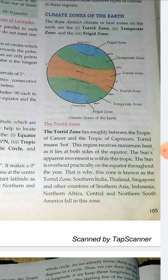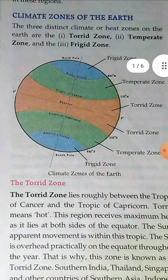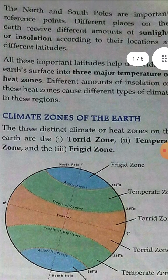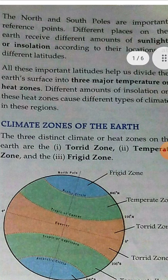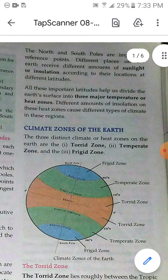Southern India, Thailand, Singapore, and other countries of southern Asia, Indonesia, northern Africa, and central and northern South America fall in this zone. We have three zones: the Torrid Zone, the Temperate Zone, and the Frigid Zone. These are known as the three major temperature zones or heat zones.